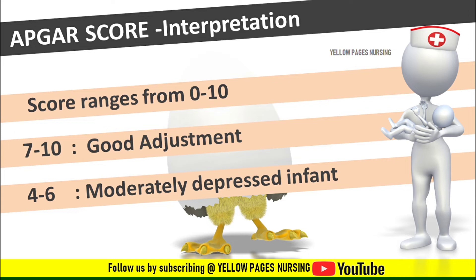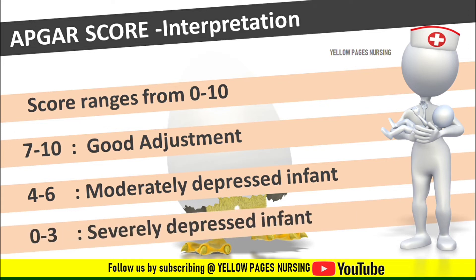A score of 0 to 3 indicates a severely depressed infant which may need full resuscitation. However, a child who has a low score at one minute and a normal score at five minutes should not have any long-term problems. A score of zero at both one and five minute intervals might generally indicate a stillborn baby. The APGAR scoring may be repeated after ten minutes if the score remains low. Remember, the purpose of the APGAR score is to determine whether a newborn needs immediate medical care — it is not designed to make long-term predictions of a child's health.